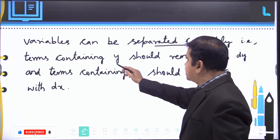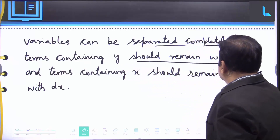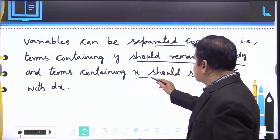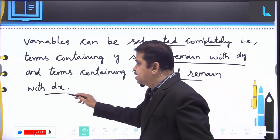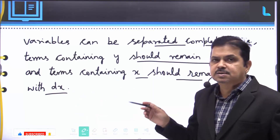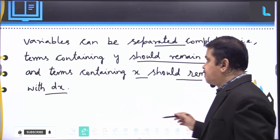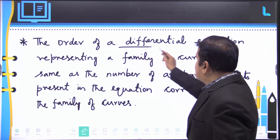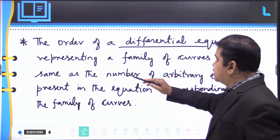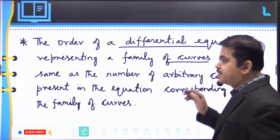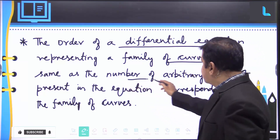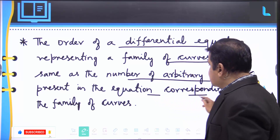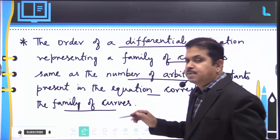The variable separable method is used to solve equations in which the variables can be separated completely — that is, terms containing y remain with dy and terms containing x remain with dx. Also, the order of a differential equation representing a family of curves is the same as the number of arbitrary constants present in the equation corresponding to that family of curves.